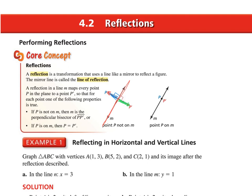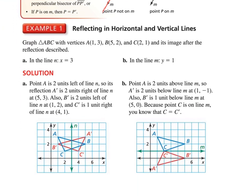Going over example one — a concrete example to really get the idea. We have three points that make a triangle on the coordinate grid, and we have to reflect this triangle in the line x equals 3. Here's the blue triangle to start with: A, B, C. Pay close attention. Here's my point A — it's two units away from the line. So my new point, A prime, is going to be two units away on the other side, leaving it at (5, 3).